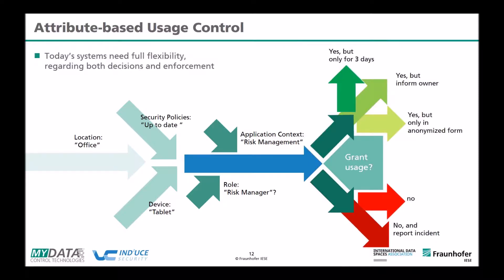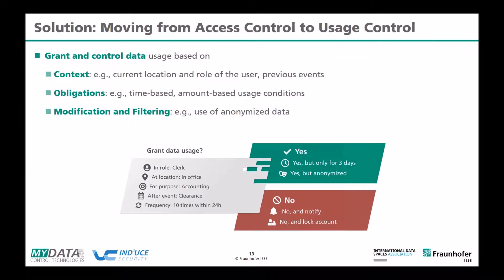We need to move toward attribute-based usage control with more flexibility: checking attributes on the left side, but also controlling data at the time of use — not just at access. This means expressing finer-grained decisions such as allowing data use but notifying the data owner, or requiring anonymization before sharing with third parties. The solution is to move from access control to usage control: granting and controlling data usage based on context, expressing obligations — time-based, amount-based — and enabling data modification and filtering.